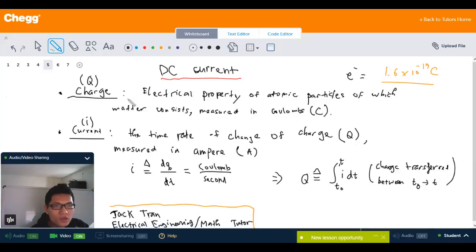We define the current I as the time rate of change of the charge, measured in ampere or the capital letter A. So the current I is actually the time derivative of the charge, which is coulombs over the second.